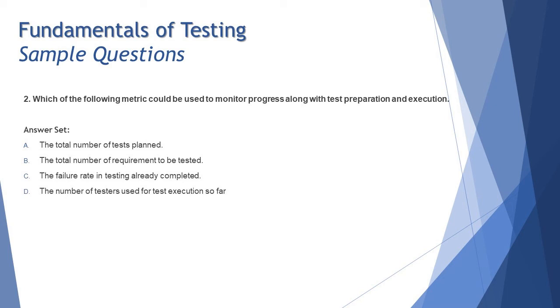A: total number of test cases planned is only for preparation. C: the failure rate in testing already completed that is from the execution. And D: the number of testers used for test execution so far that is for the manpower not for the preparation or execution. So final answer here is B but big highlight that this is not a foundation level question. This is in the advanced level test manager.